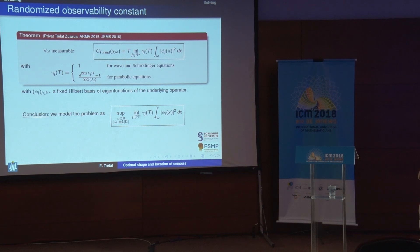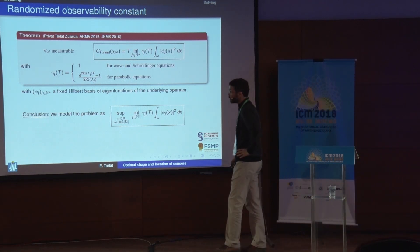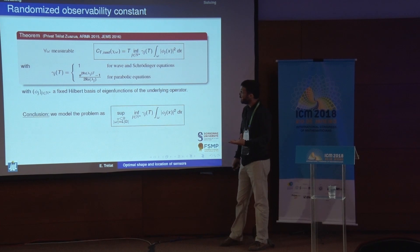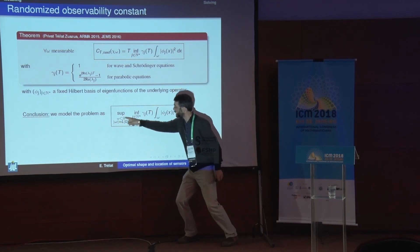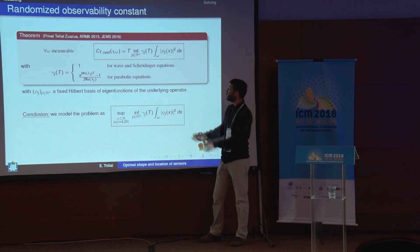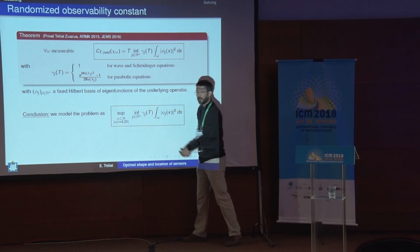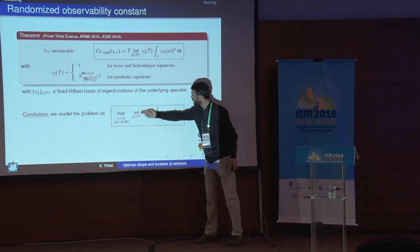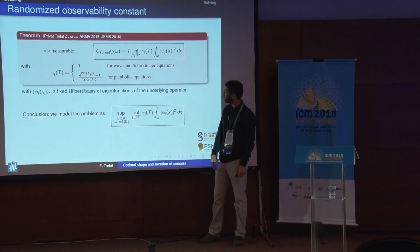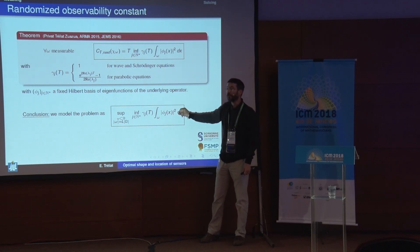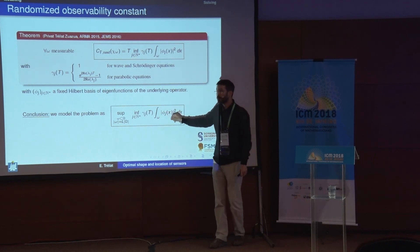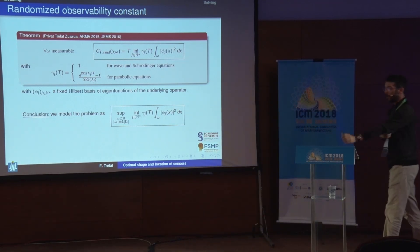As a conclusion of this preliminary discussion, we choose, finally, to model the problem of best possible observation as the problem of maximizing over all possible subsets small omega of given Lebesgue measure this randomized observability constant — the infimum over all possible modes of some weight times the localized integral of the square of the j-th eigenfunction — a problem that we hope to be more tractable.